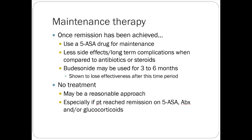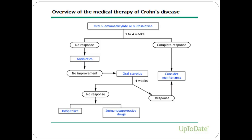If somebody has mild Crohn's and you solved the flare with no remaining symptoms, there's some evidence that not treating the patient at all is a reasonable response. The step-up chart shows: start with a 5-ASA drug, then antibiotics if no response, then steroids. In real life, for the majority of Crohn's patients, this approach is not going to work and we'll end up needing immunosuppressive drugs or hospitalizing them.